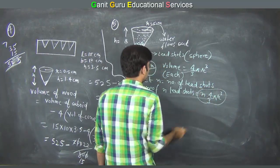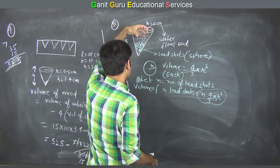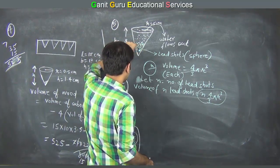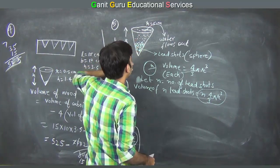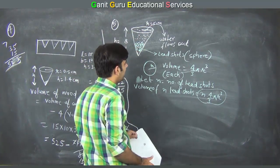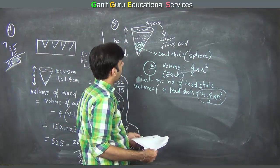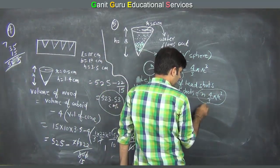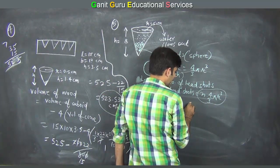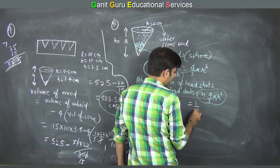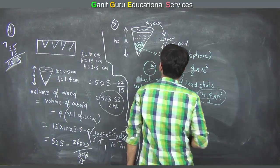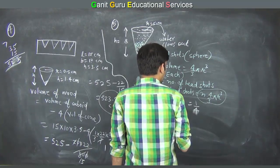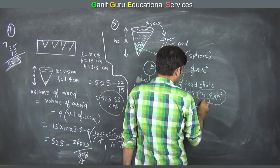Since we are dropping many lead shots, their volume displaces the water. The water that comes out equals their volume. The water flowing out is given as one-fourth of the total volume. That means the volume of n lead shots equals one-fourth of the volume of the cone, which is (1/3)π r_c² h.